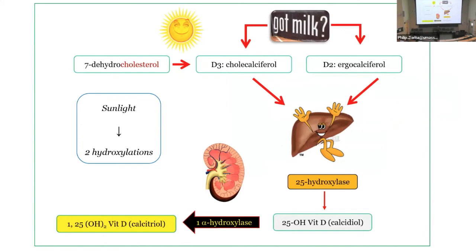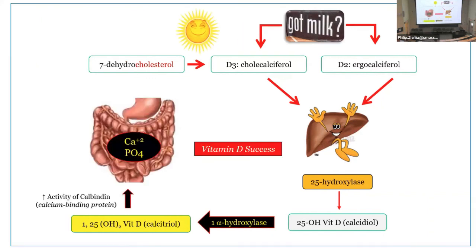The vitamin D pathway: sunlight converts 7-dehydrocholesterol to cholecalciferol or ergocalciferol, both also available through dietary sources and fortified foods. The first hydroxylation occurs in the liver via 25-hydroxylase. The kidney then performs the second step. Too much 1-alpha hydroxylase — whether ectopic or from excess vitamin D intake — leads to hypercalcemia via increased gut absorption.